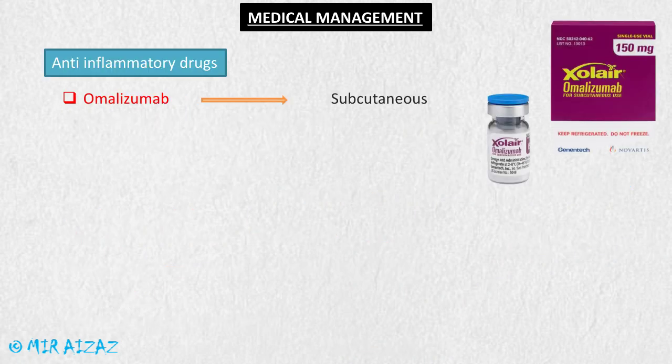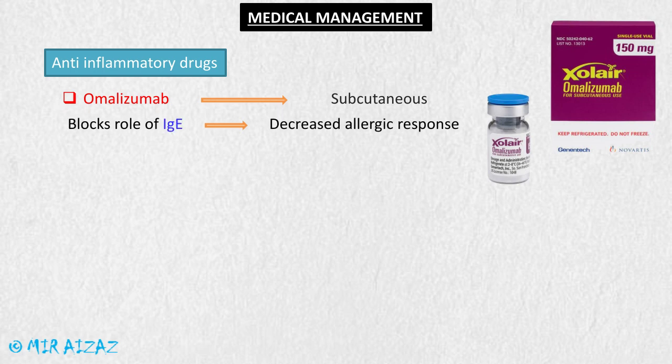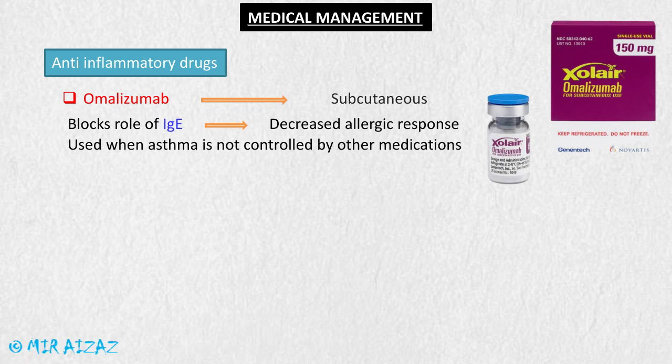The next is omalizumab, taken as a subcutaneous injection. It is an anti-IgE antibody, because immunoglobulin E is mainly responsible for evoking the allergic response. By blocking IgE, omalizumab decreases the allergic response. It is used in patients whose asthma is not controlled with other medications and is not used for quick relief.